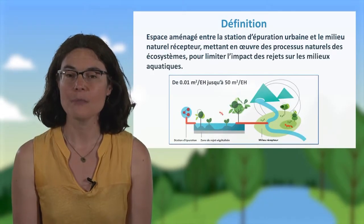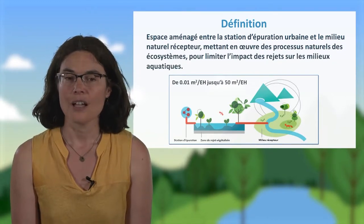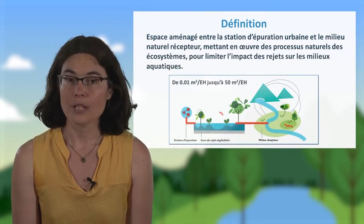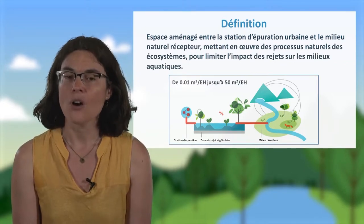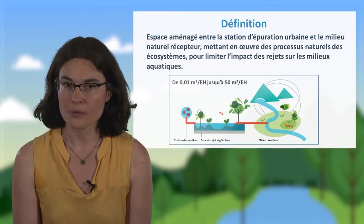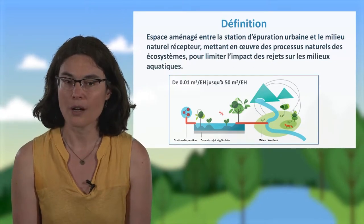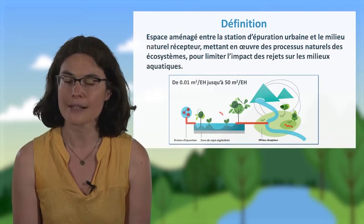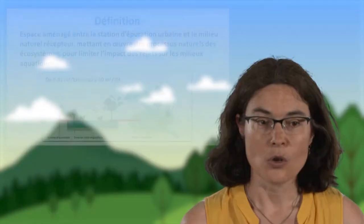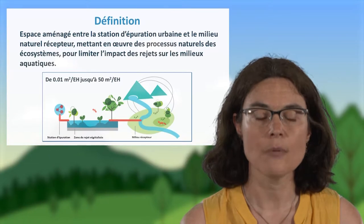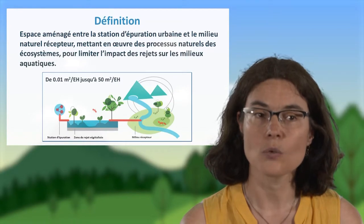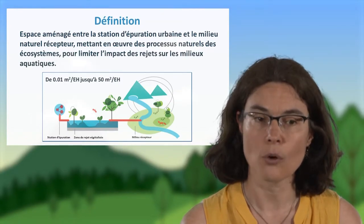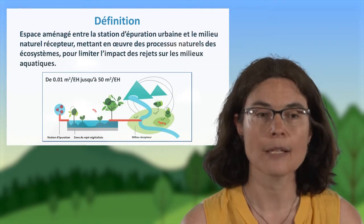Leur implantation s'est démultipliée durant ces 15 dernières années. Un groupe de travail national s'intéressant aux procédés nouveaux en assainissement pour les petites et moyennes collectivités en a dénombré plus de 560, implantés majoritairement en sortie de petites stations d'épuration de taille inférieure à 500 équivalents habitants. Leur surface est largement dépendante de l'espace disponible à proximité de la station, variant de 0,01 m² à plus de 50 m² par équivalent habitant.